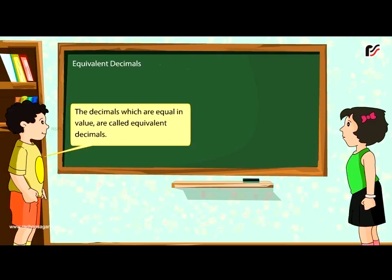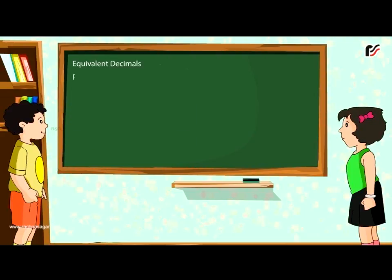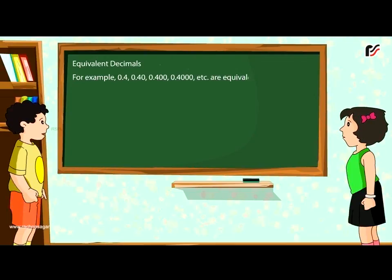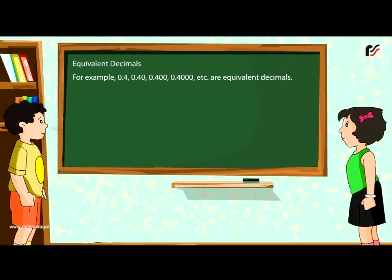Equivalent decimals. Decimals that are equal in value are called equivalent decimals. For example, 0.4, 0.40, and 0.400 are equivalent decimals.